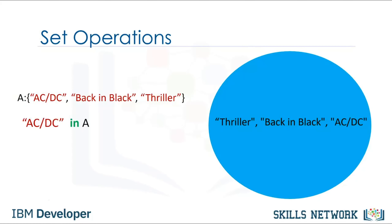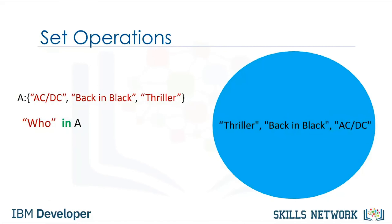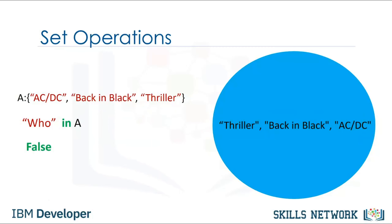We can verify if an element is in the set using the IN command. The command checks that the item, in this case ACDC, is in the set — if the item is in the set, it returns TRUE. If we look for an item that is not in the set, in this case WHO, as the item is not in the set, we will get a FALSE. These are types of mathematical set operations.